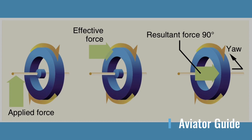Before the gyroscopic effects of the propeller can be understood, it is necessary to understand the basic principle of a gyroscope. All practical applications of the gyroscope are based upon two fundamental properties: rigidity in space and precession. The one of interest here is precession. Precession is the resultant action or deflection of a spinning rotor when a deflecting force is applied to its rim. As seen in the figure, when a force is applied, the resulting force takes effect 90 degrees ahead of and in the direction of rotation.